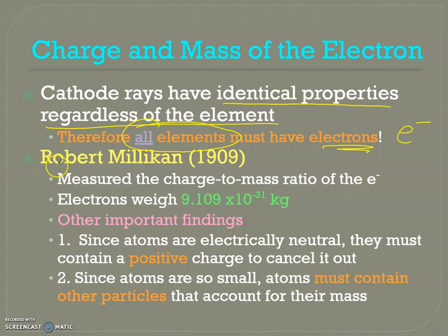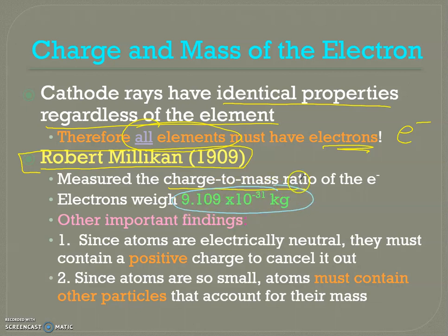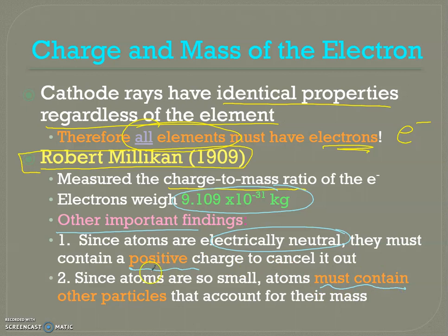Robert Millikan piggybacked on that and in 1909 figured out the charge-to-mass ratio of the electron. He figured out that electrons are ridiculously small — 9.109 times 10 to the negative 31st kilograms. He also found that all atoms are neutral, so there has to be something positive inside to cancel out the negative charge. Because electrons are so small, the positive charge didn't account for the whole mass, so maybe there was something else with mass inside — opening the door for the discovery of the proton and neutron.